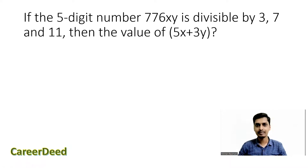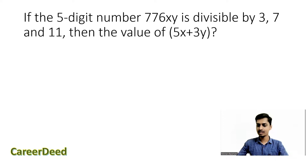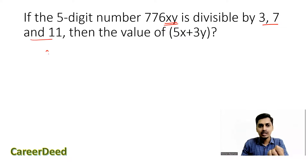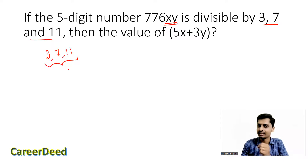If the 5-digit number 277-6-X-Y is divisible by 3, 7, and 11, then the value of 5x + 3y is what? We have a five-digit number where we don't know the last two digits X and Y. The hint is that this number is divisible by 3, 7, and 11. We can find the lowest number divisible by all three, which is the LCM of those numbers.